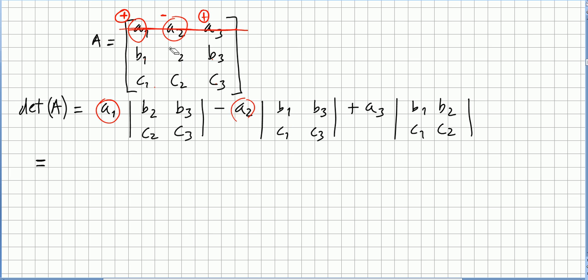And now you take A3. You do this cross. And you get B1, B2, C1, C2. So this will be A1 times the determinant of B2, B3, C2, C3. A2 times this determinant. And A3 times this determinant. So we choose the first row.